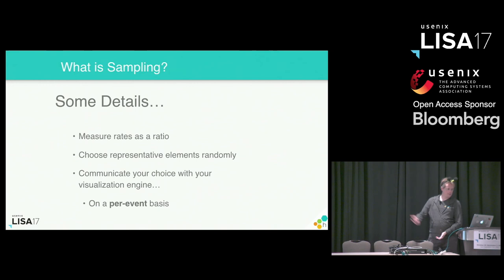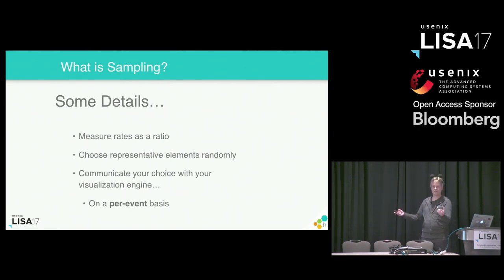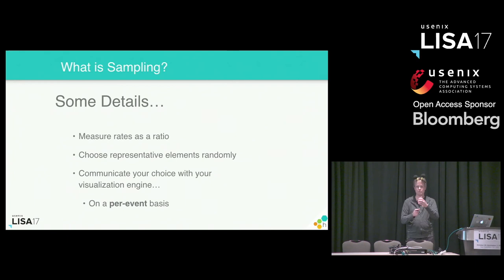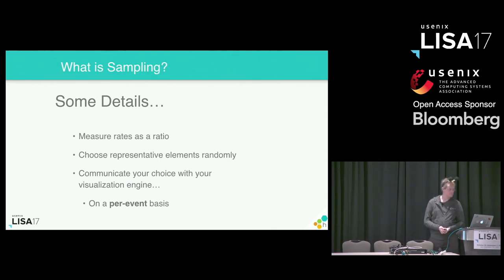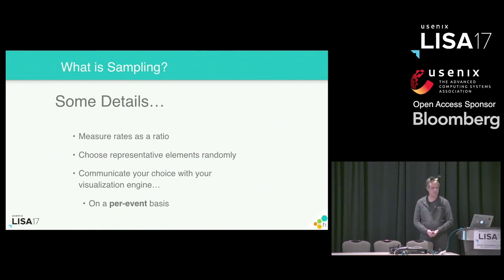I mentioned choosing your elements randomly in order to ensure you're not creating patterns. That seems to be in conflict with using the content to influence sampling. What I mean is: within a category — say, HTTP 200 status codes at this rate — those must be chosen randomly. You have to communicate this choice to your observability infrastructure so that you don't need to do math. You let the machines do it, and that has to be on a per-event basis in order for the math to work out if you want to adjust your sample rates in any interesting way beyond just a fixed rate.